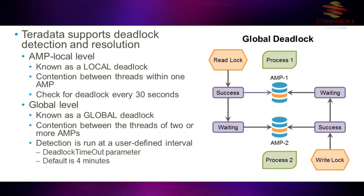A local deadlock is contention between threads within one AMP. It checks for deadlocks every 30 seconds — literally just checking whether any deadlocks have occurred.